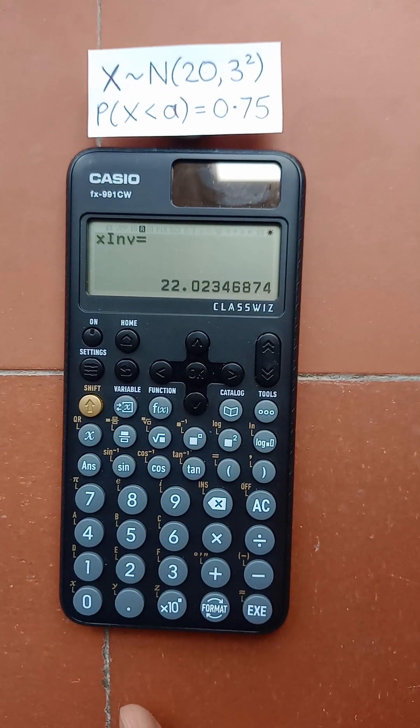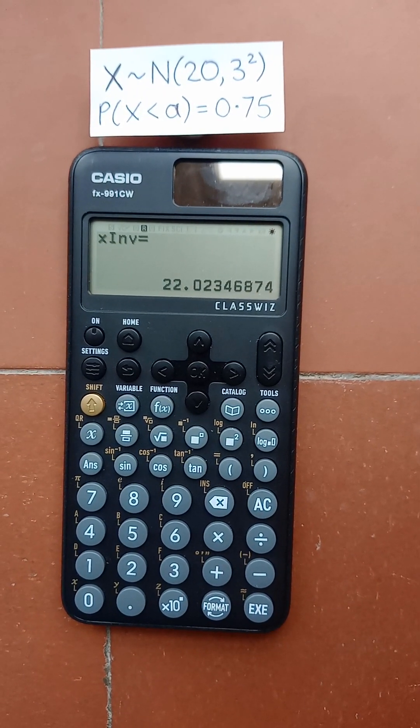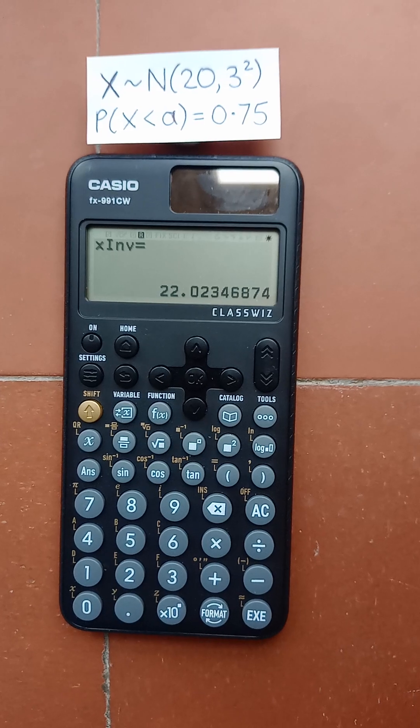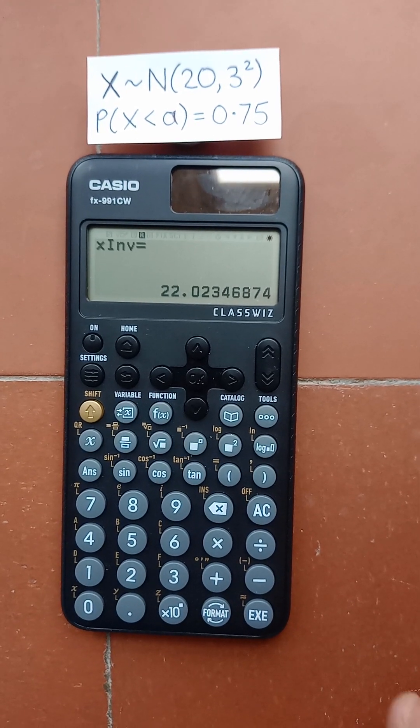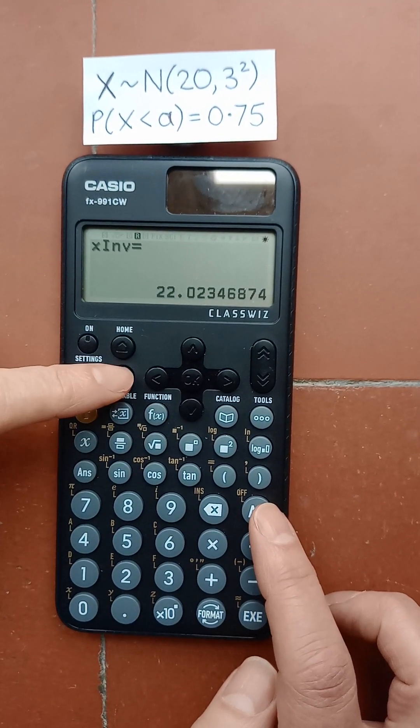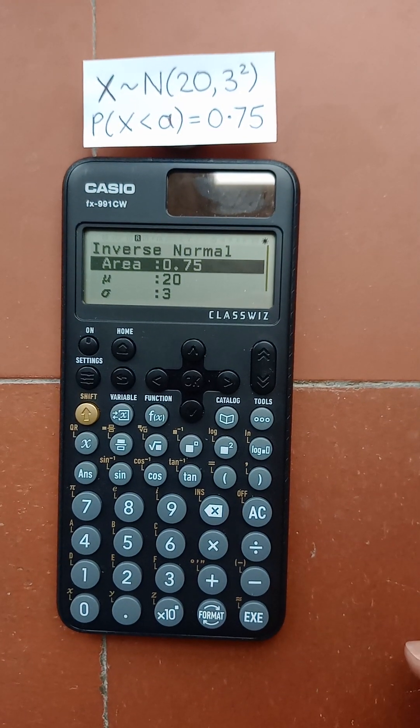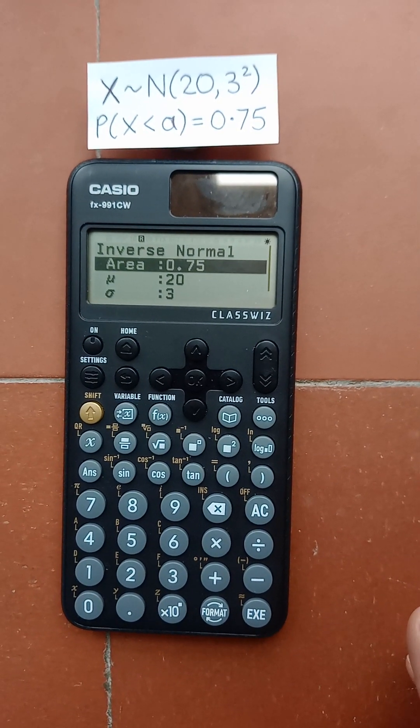Then press execute for the required probability. If you want to continue using the same normal distribution, you could just press AC or back to get back to where you entered your values.